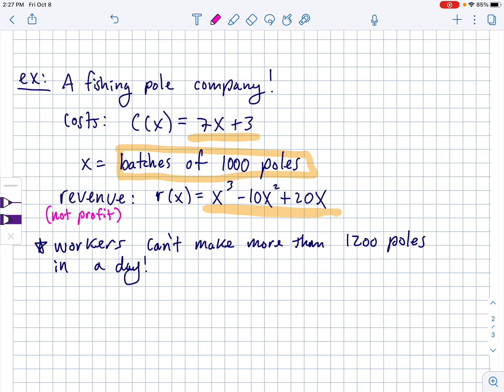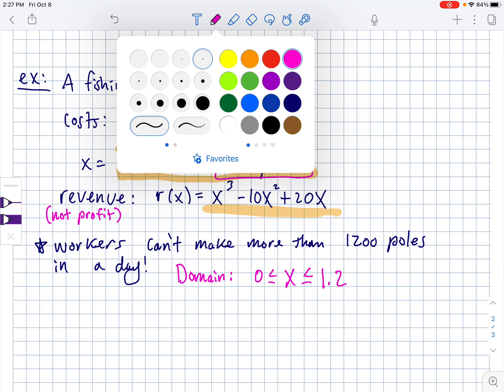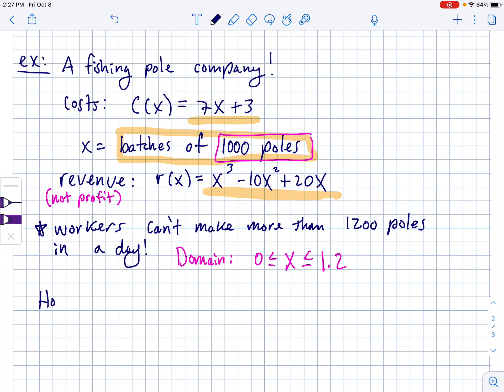So if X is batches of 1000 poles, that means that the workers, the domain, the workers can make zero poles, doesn't make much sense, but they could make zero poles, that the X has to be between zero and 1.2. 1.2 is 1200 poles in terms of thousands because X is in thousands of poles. So the question we're going to answer here, how many poles should they make to maximize profit?